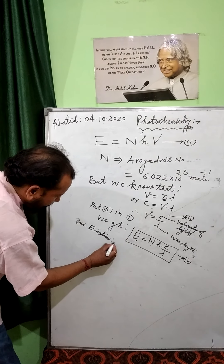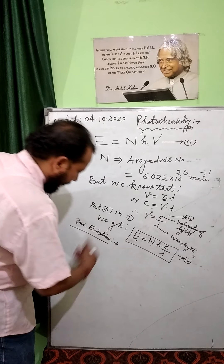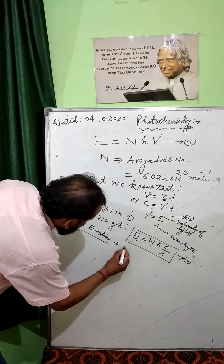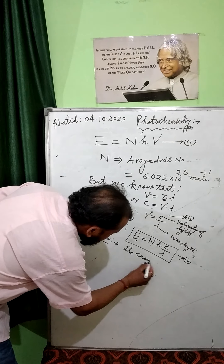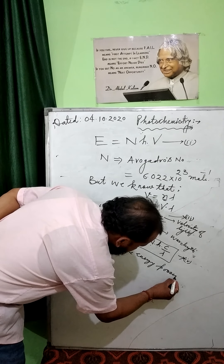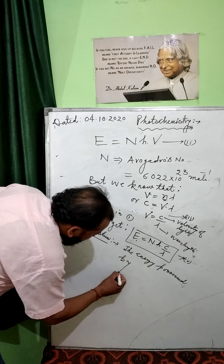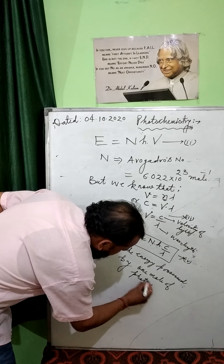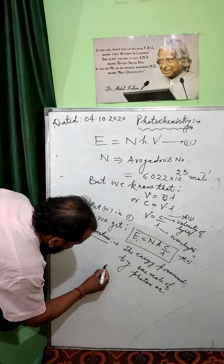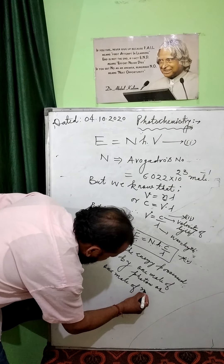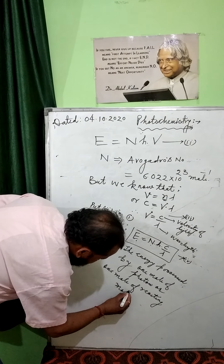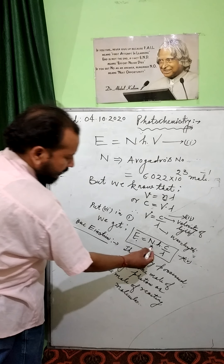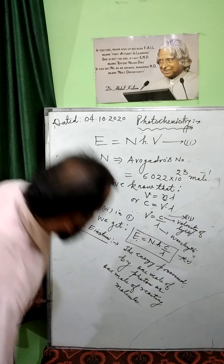One Einstein is a very important definition, generally asked in exams and competitive examinations. One Einstein is defined as the energy possessed by one mole of photons, or the energy absorbed by one mole of reacting substances or molecules. So one Einstein = Nhc/λ.